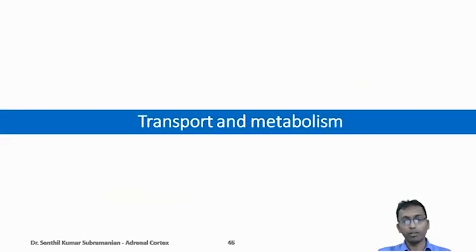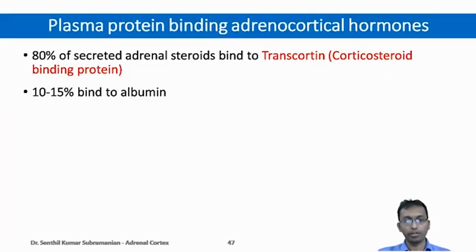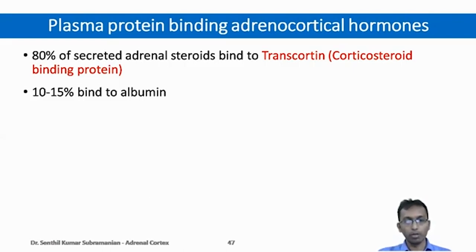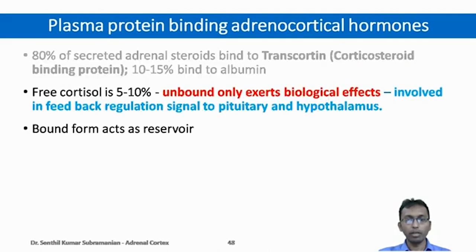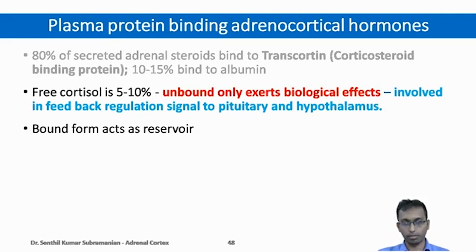Now moving on to the transport and metabolism of glucocorticoids. 80% of secreted adrenal steroids bind to transcortin, a corticosteroid-binding protein. The remaining 10 to 15% bind to albumin. So almost 90 to 95% of cortisol is in bound form. Only 5 to 10% is in free form. Importantly, only the free cortisol exerts biological effects and undergoes physiological actions. Only the free form is involved in feedback regulation signaling to the pituitary and hypothalamus. The bound form of cortisol only acts as a reservoir.